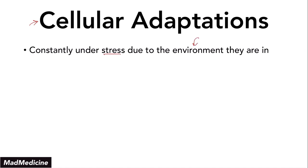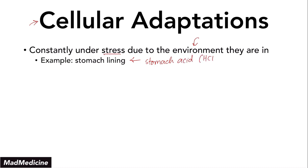Let me give you an example: the stomach lining. The cells that make up our stomach lining are constantly being exposed to stomach acid, which is essentially hydrochloric acid and it is very corrosive. It will deteriorate and destroy the stomach lining. In order for our cells to survive in that stressful environment, we have developed cellular adaptations, which we'll discuss in subsequent lectures.